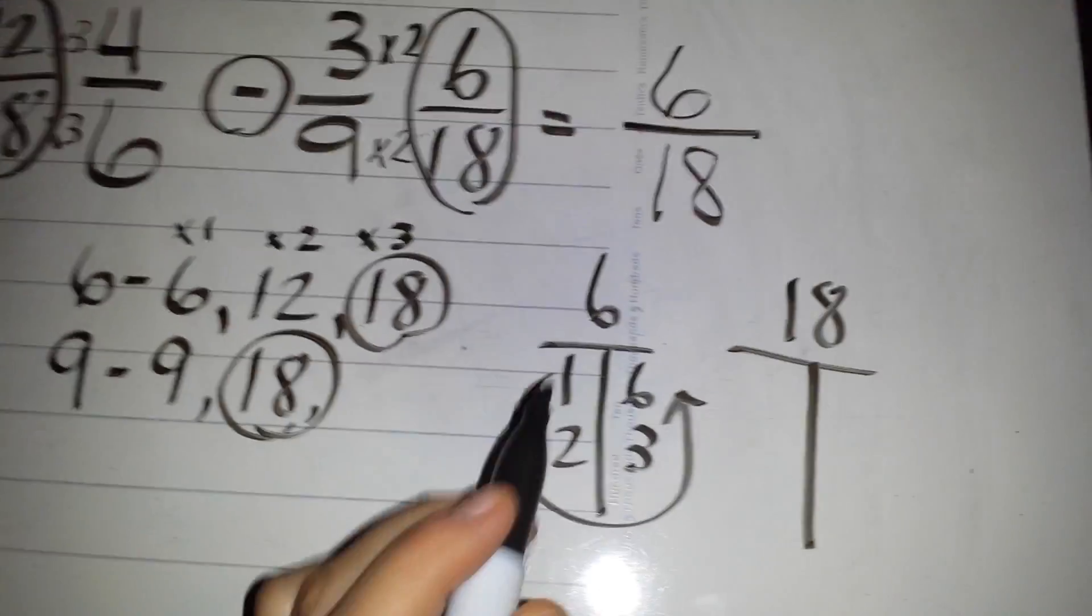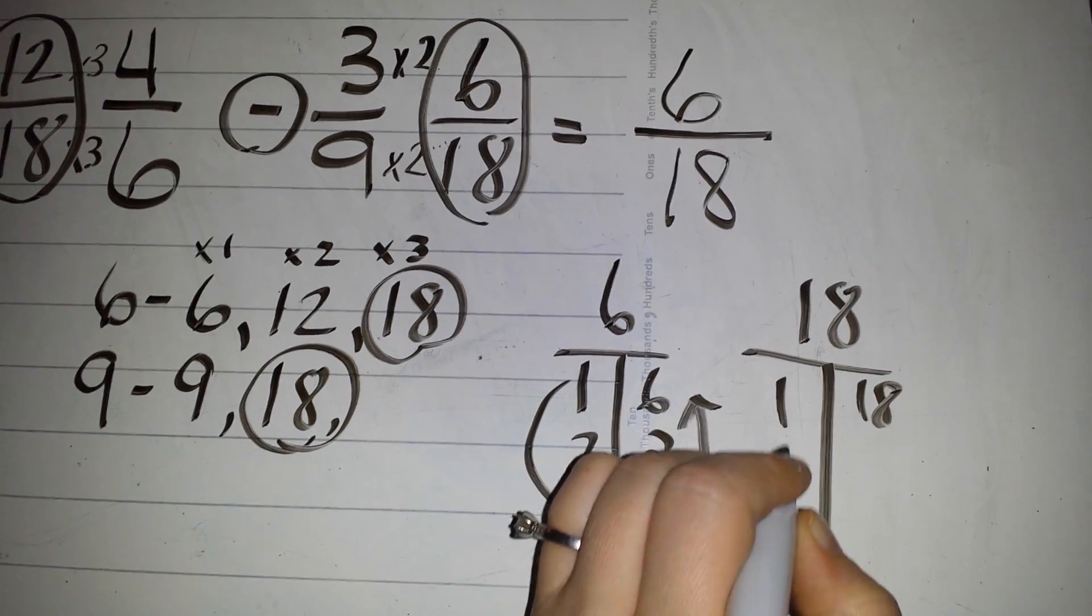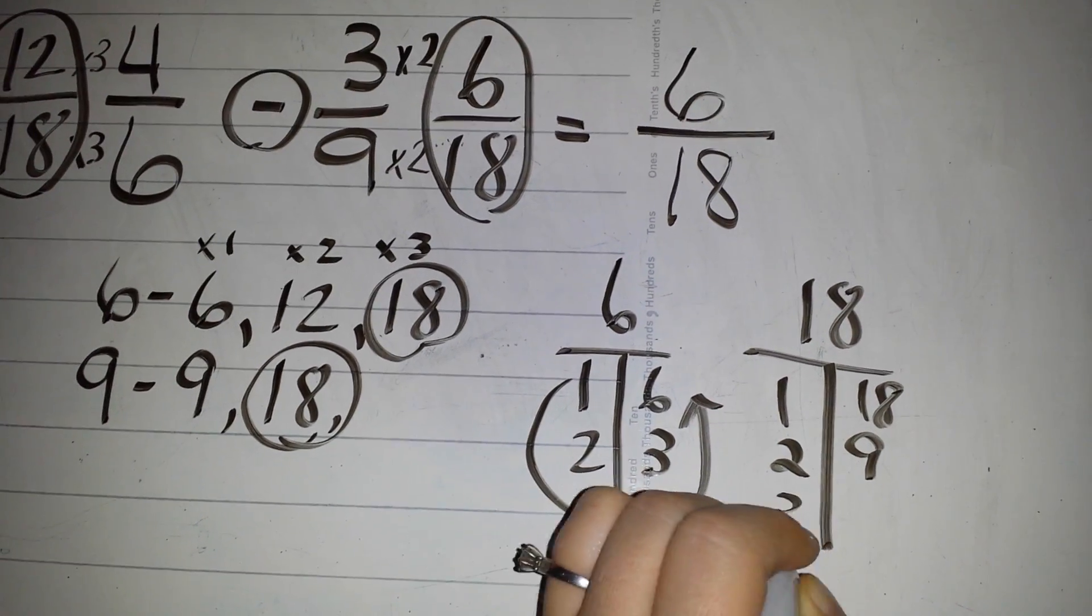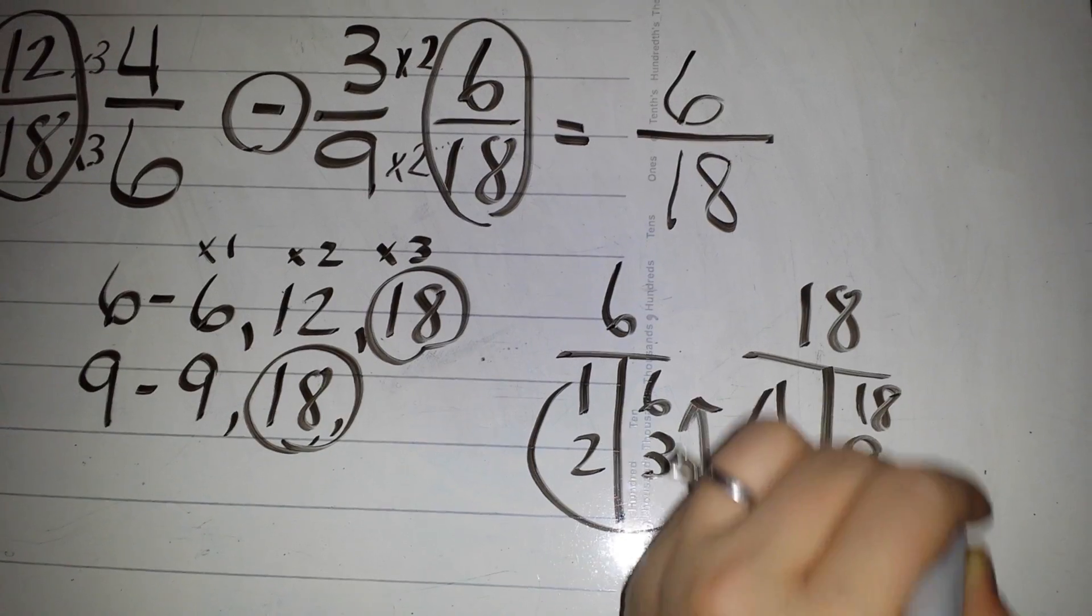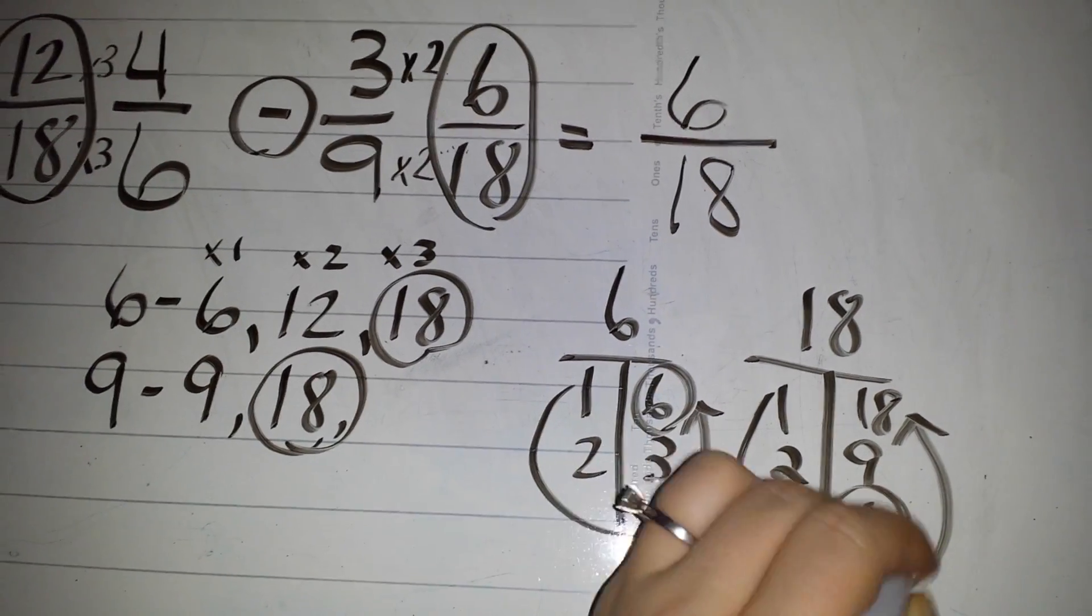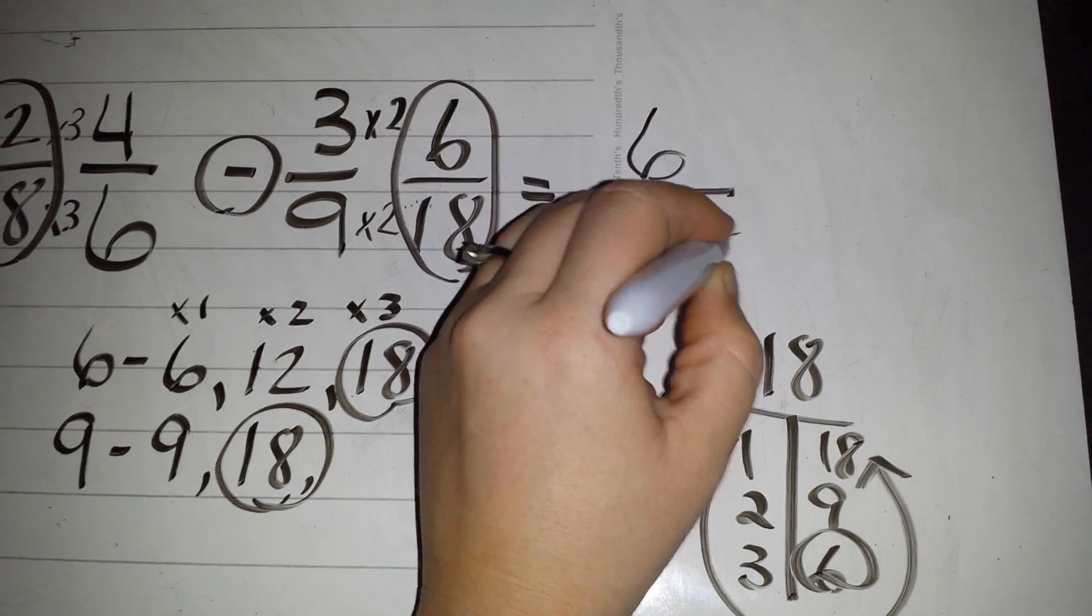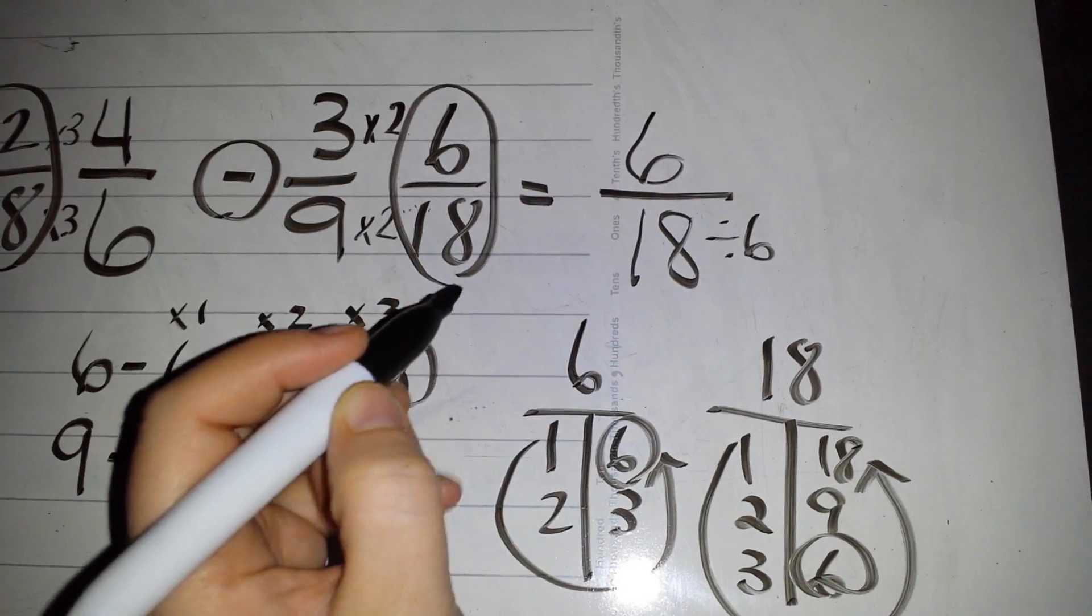Eighteen. One eighteen, two and nine, three and six. Six is our biggest number they have in common. We're going to divide by six with our HCF.